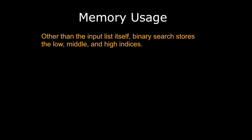We will grade this on the number of values binary search stores. So, other than the input list itself, binary search stores the low, middle, and high indices. So that's going to be three values, which means that we can classify this as three times n to the zero. That's simply three times one. And the first thing we do is remove constant coefficients. And now we can simply classify this as O of one memory usage because n to the zero is equal to one.